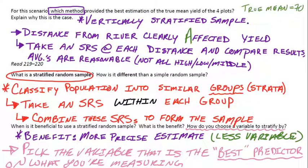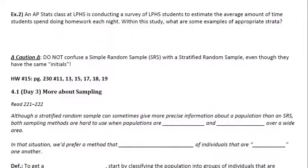So how do you know what to stratify by? You want good results — you're doing this to make your sample more specific. Pick the variable that is the best predictor of what you're measuring. Example two: an AP Stats class at LPHS is conducting a survey to estimate the average amount of time students spend doing homework each night. What are some examples of appropriate strata?